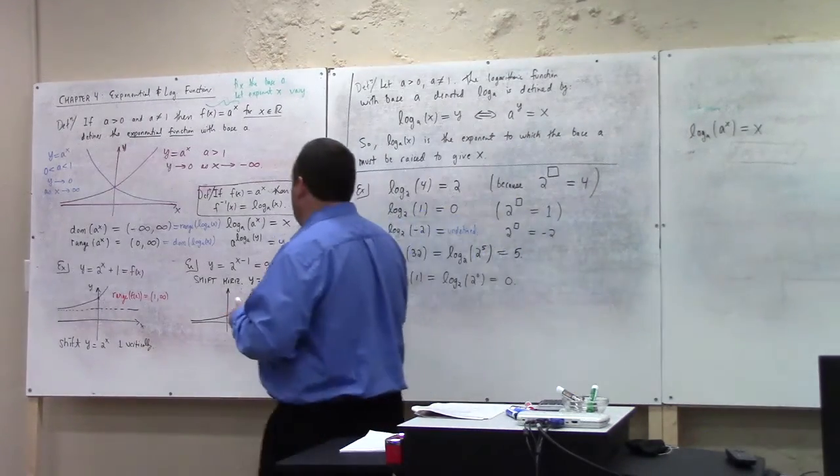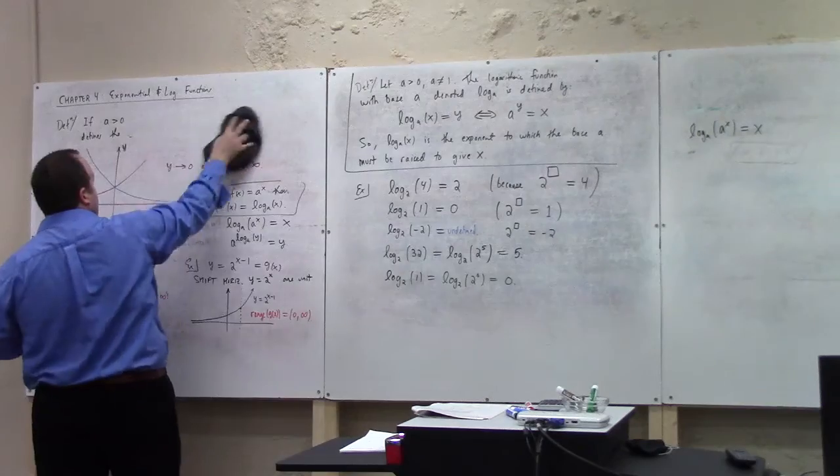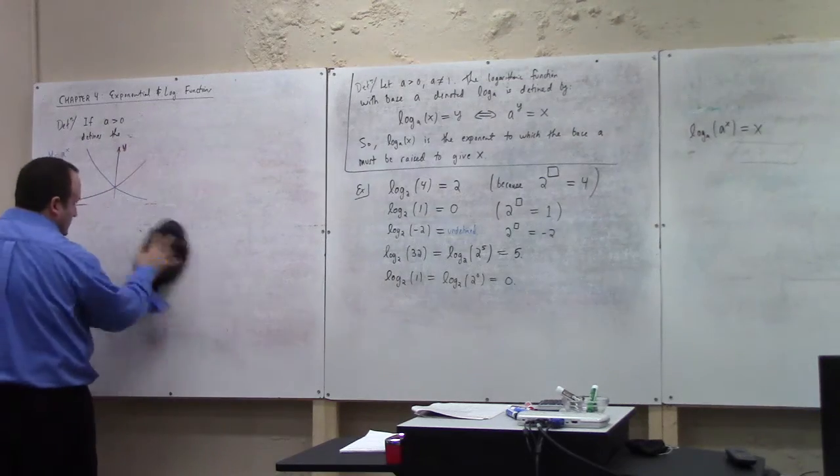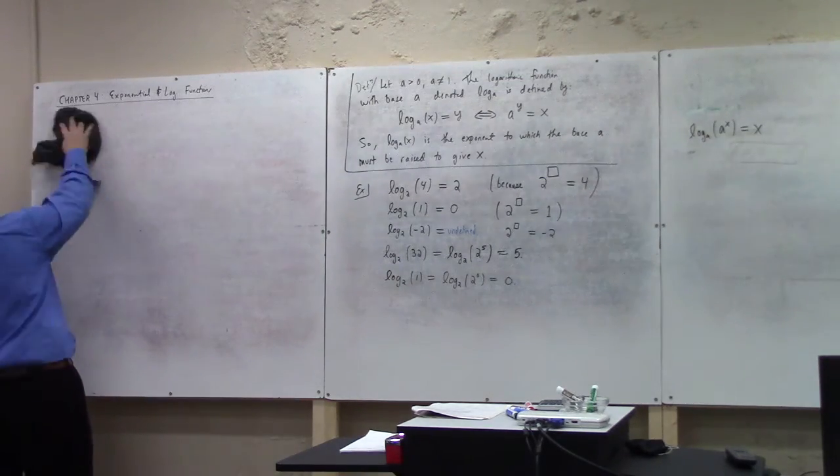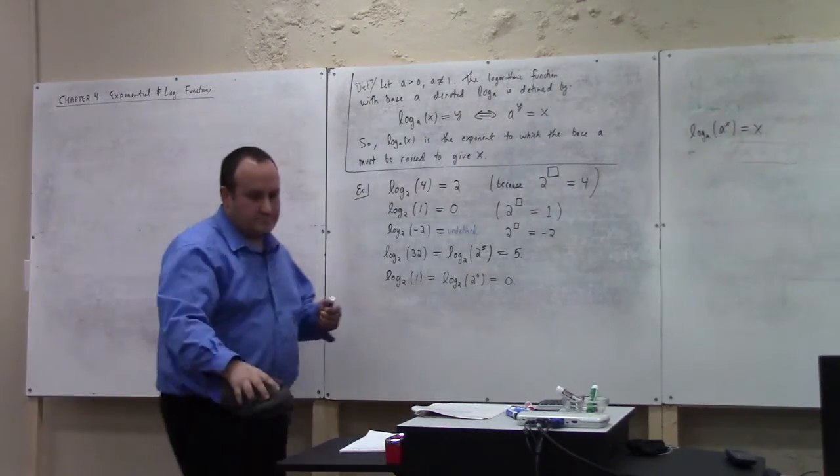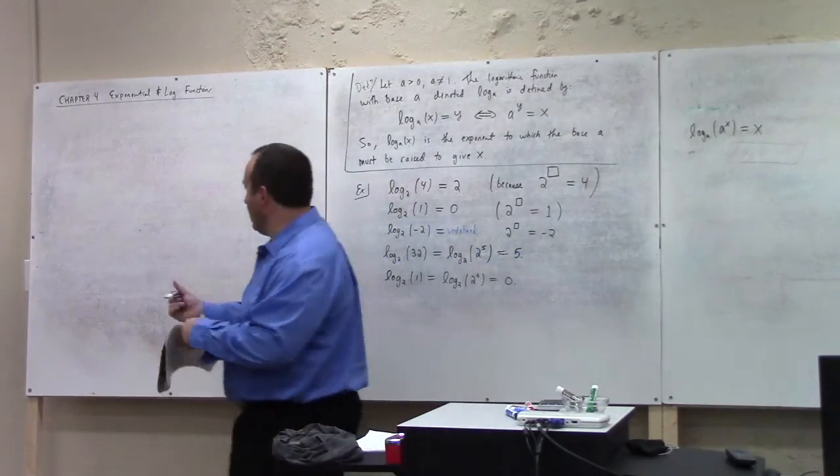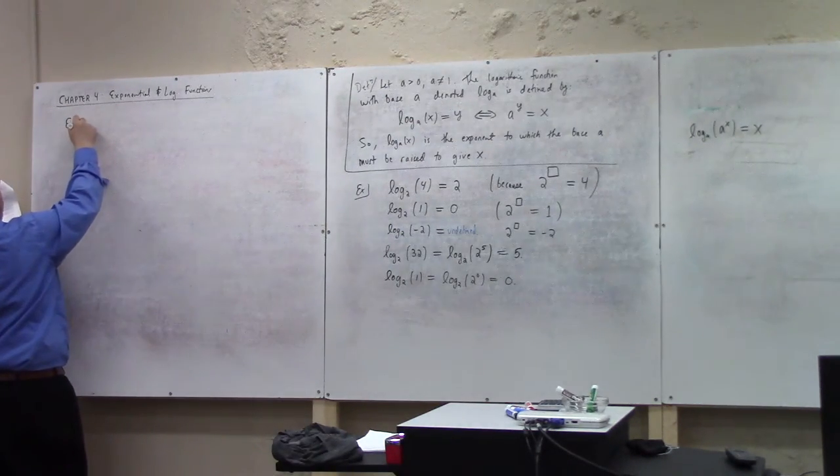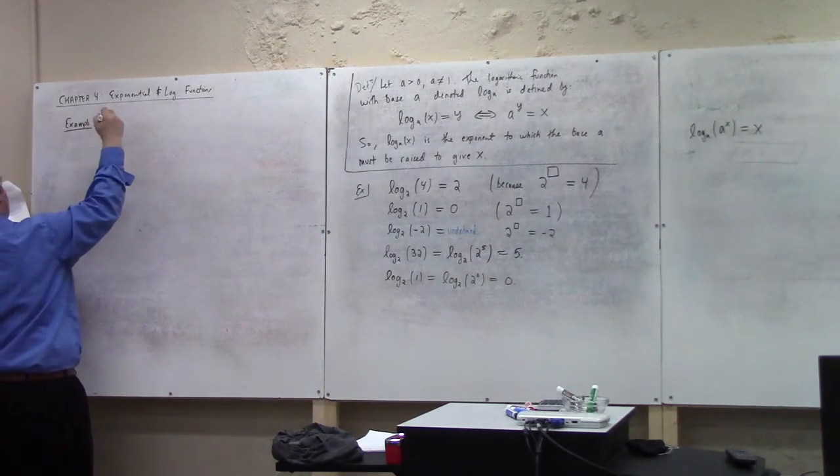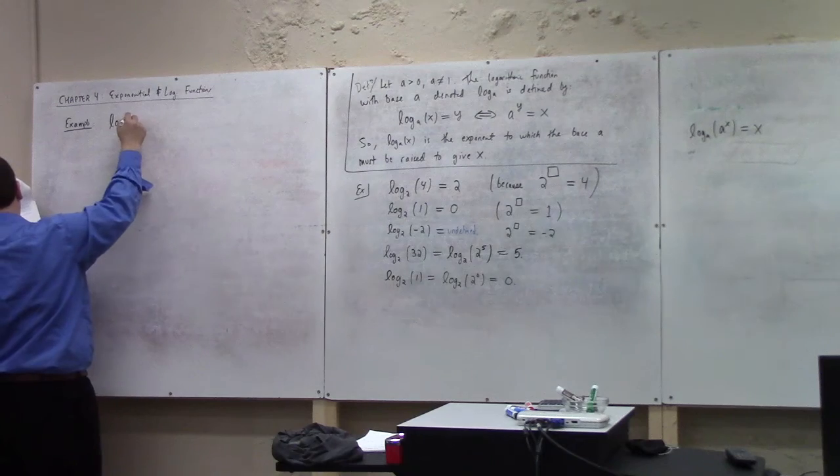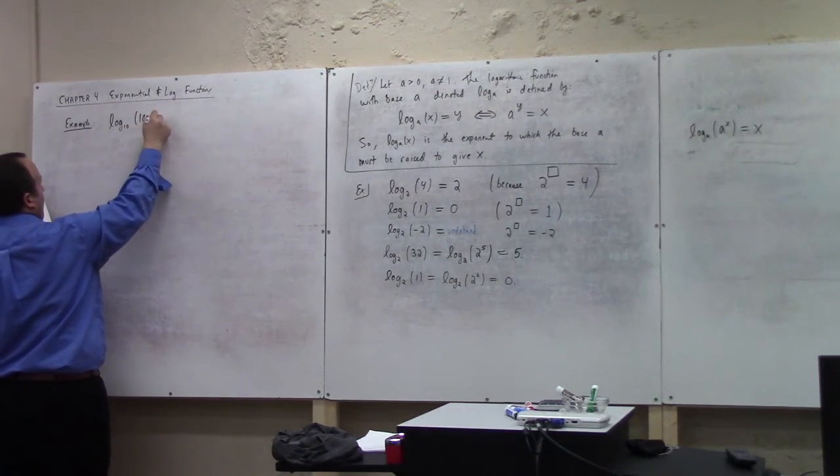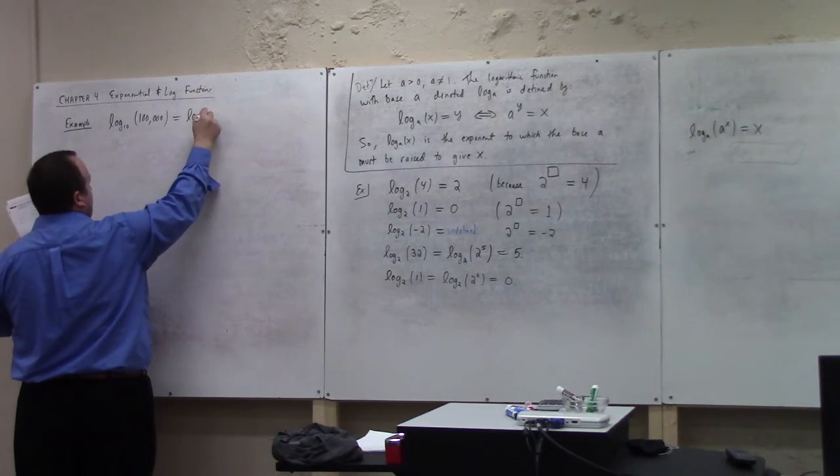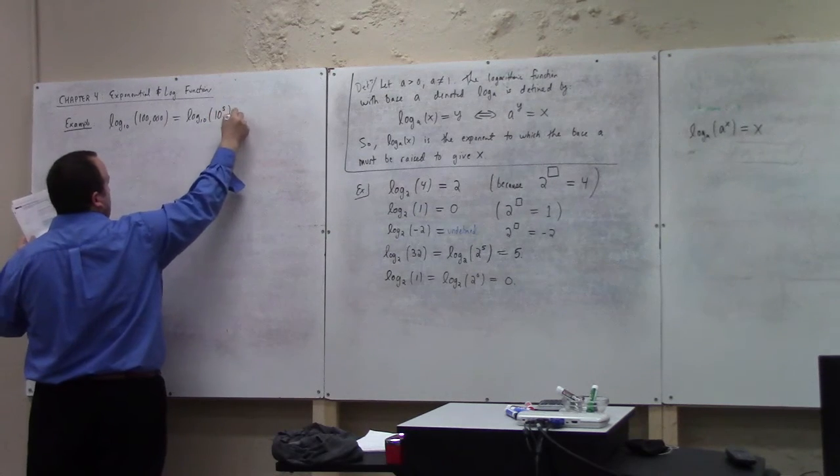Now I suppose I should take a second here to contrast the exponential and the logarithmic form of some numbers, like here. So the textbook has like log base 10 of 100,000 is what? Well, I would point out that that's log base 10 of 10 to the 5. So that's equal to 5.